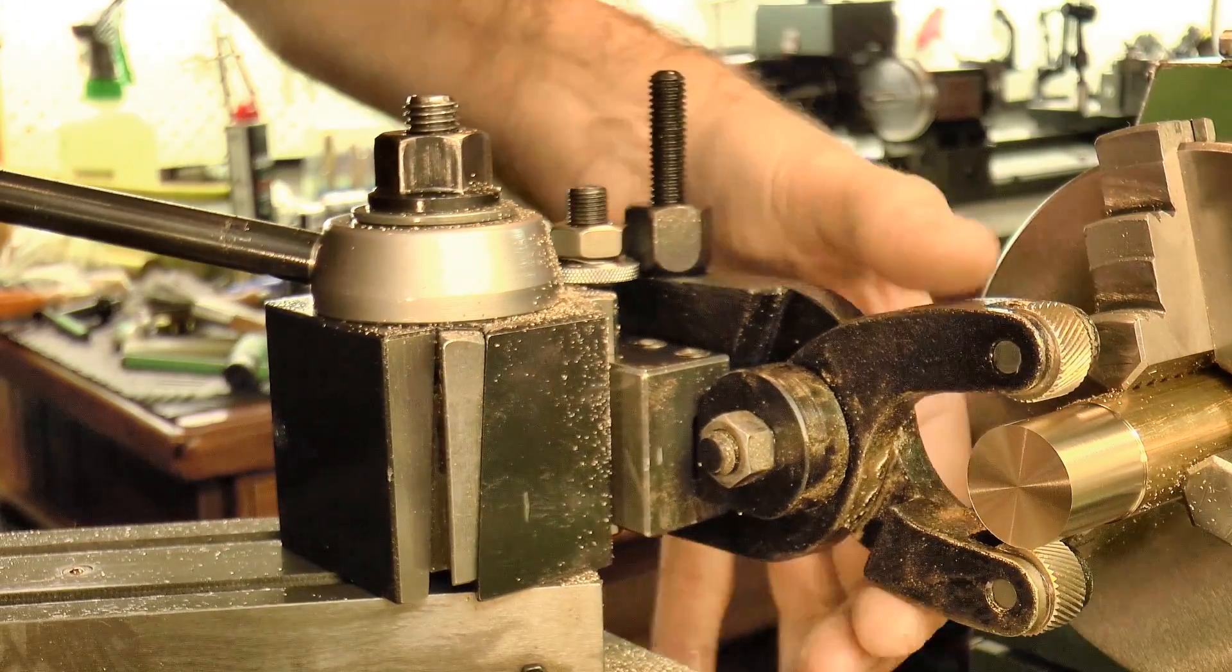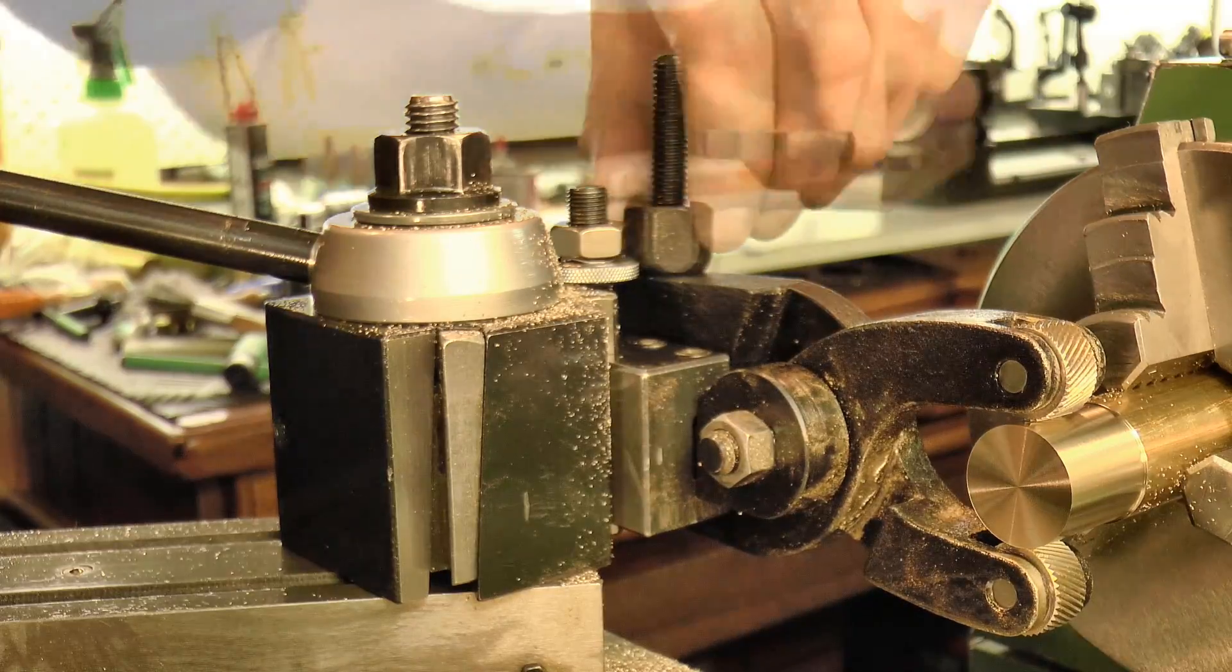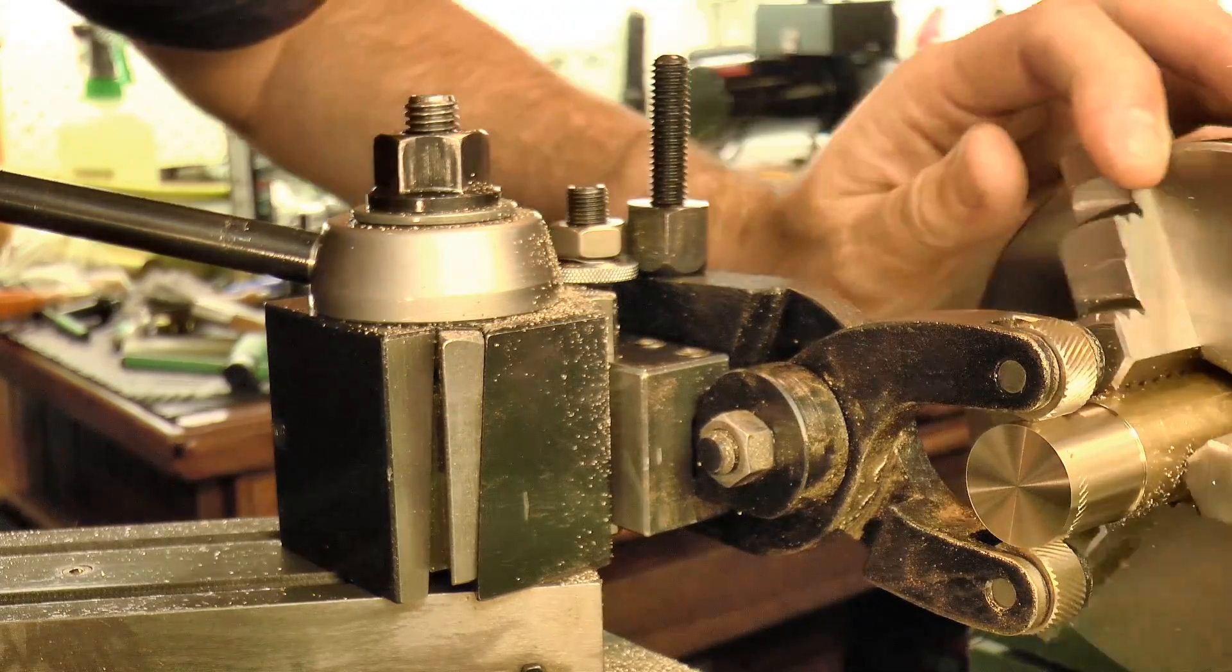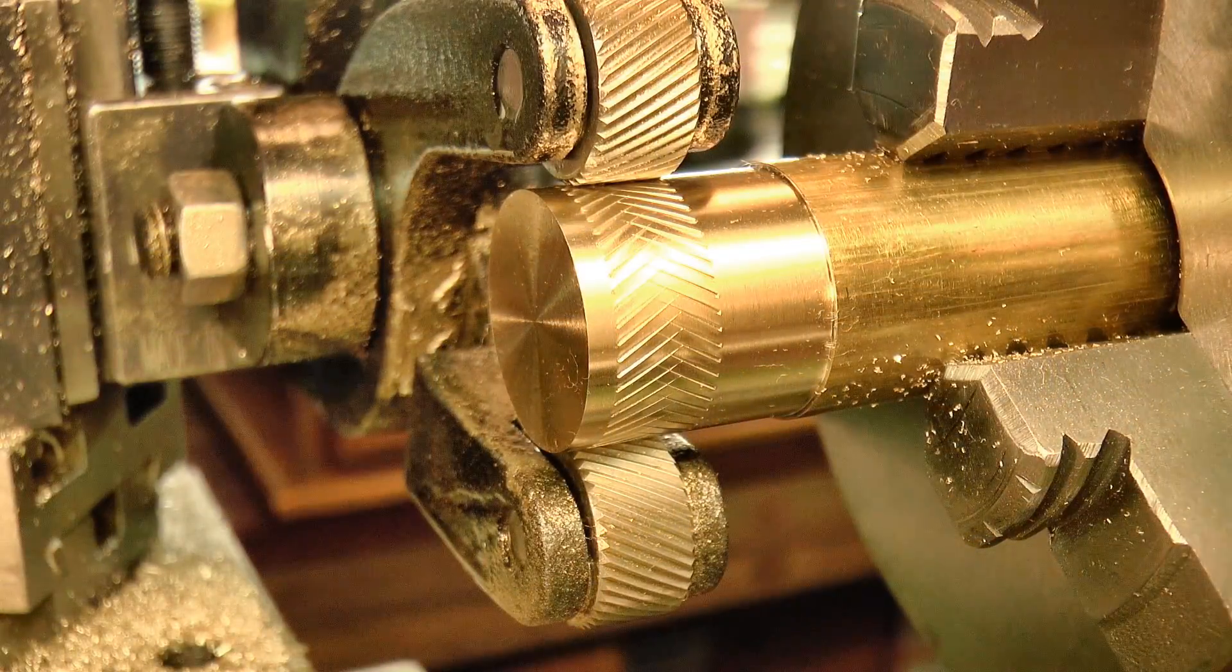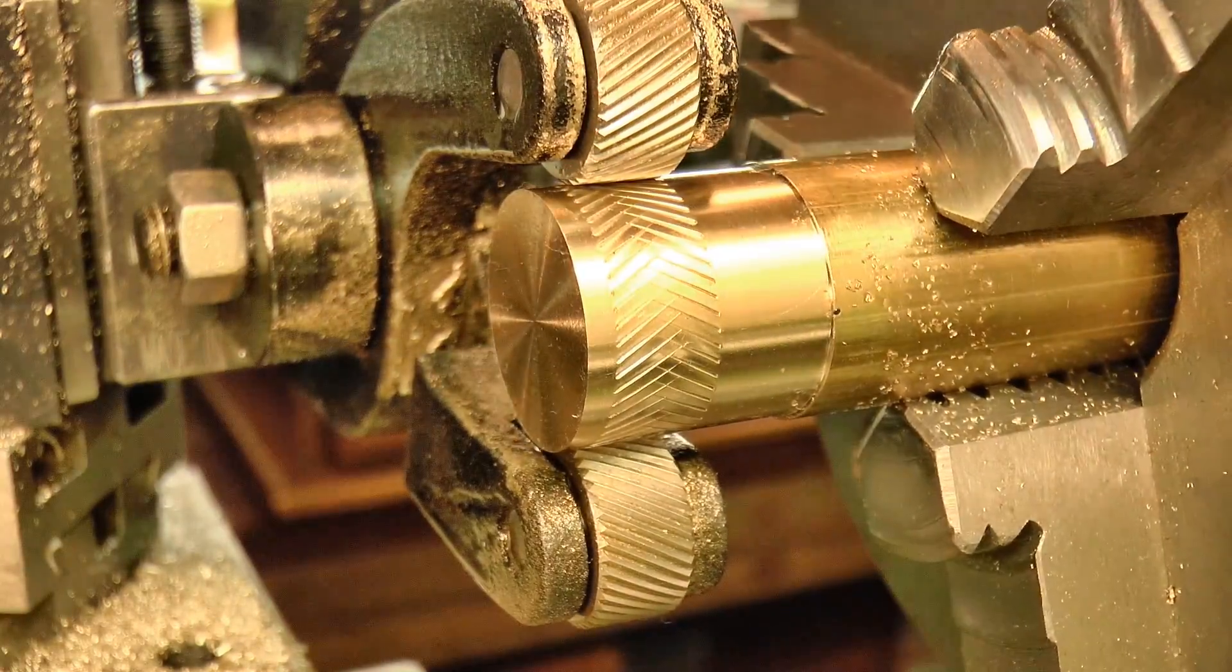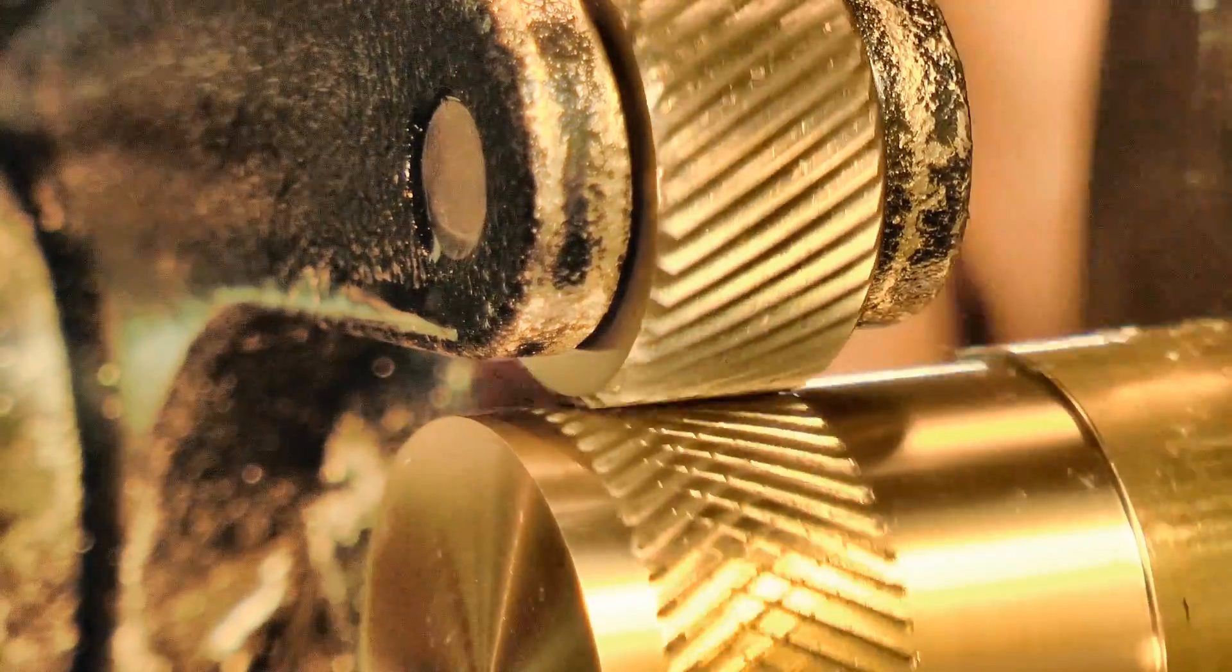Then I gently made a light imprint with the knurl, so I could check for any double tracking. Once that looked good, I lightly increased the pressure, rotating by hand until the pattern was nicely established.